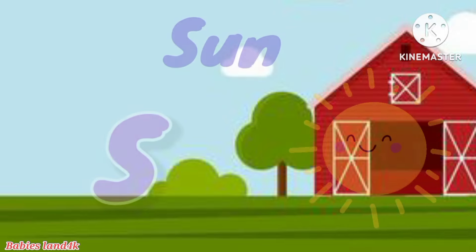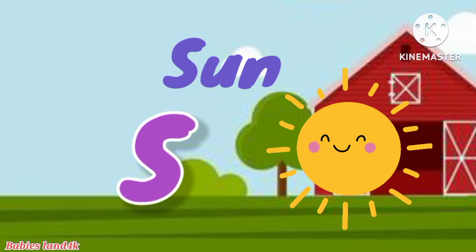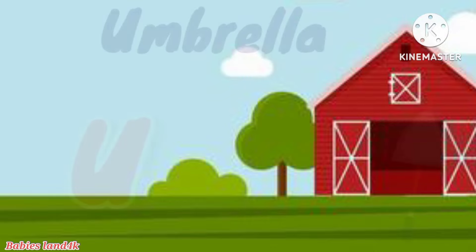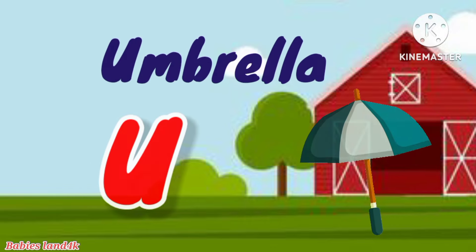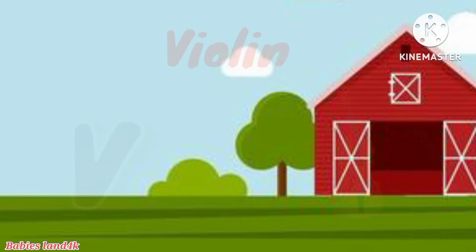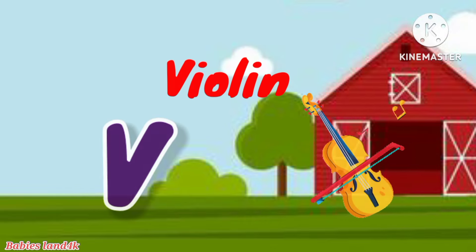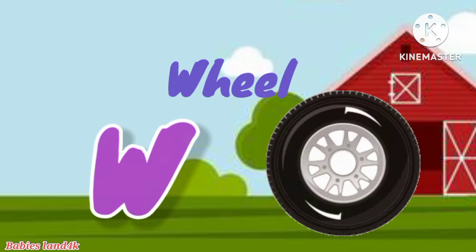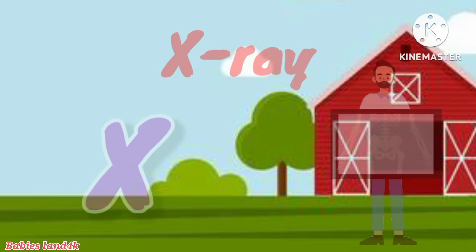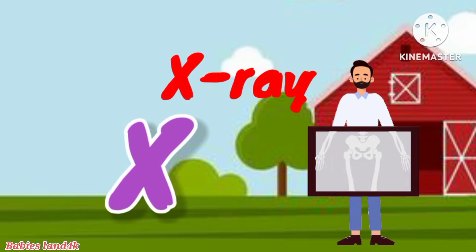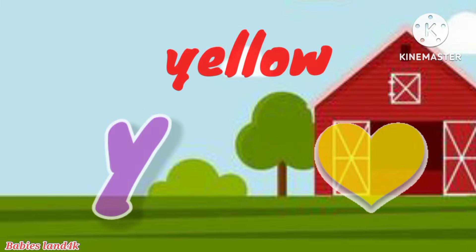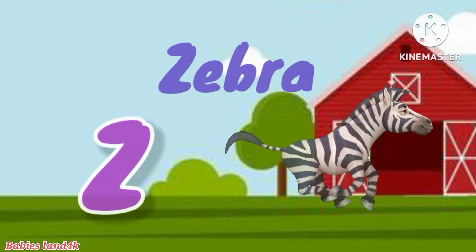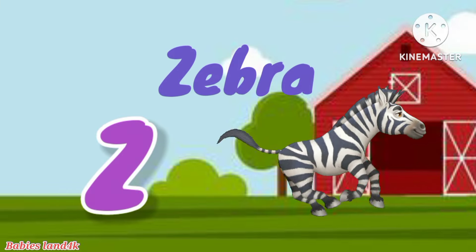S is for sun, s-s-sun. T is for train, t-t-train. U is for umbrella. V is for violin, b-b-violin. W is for wheel, b-b-wheel. X is for x-ray, x-x-x-ray. Y is for yellow, b-b-yellow. Z is for zebra, z-z-zebra.